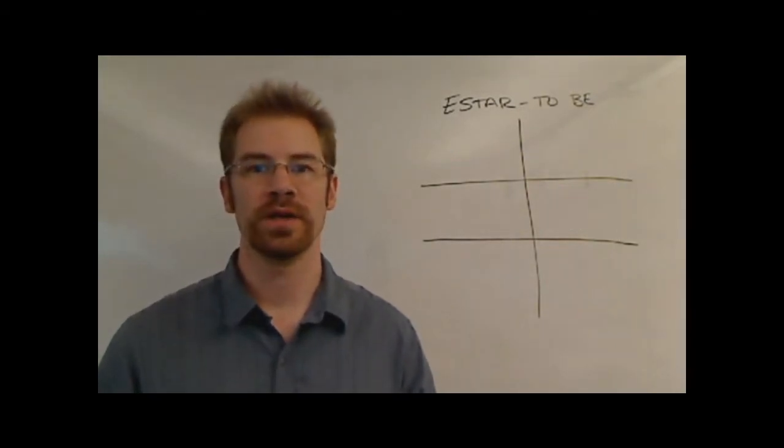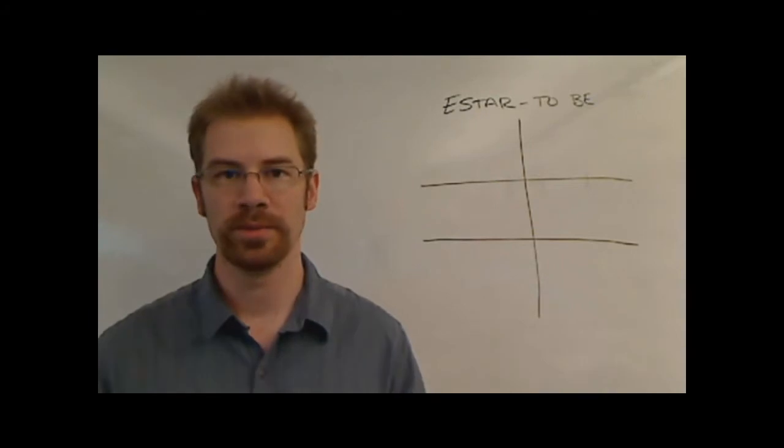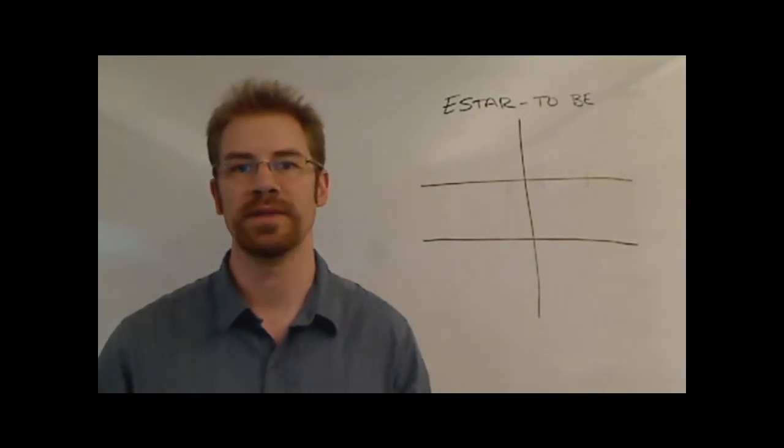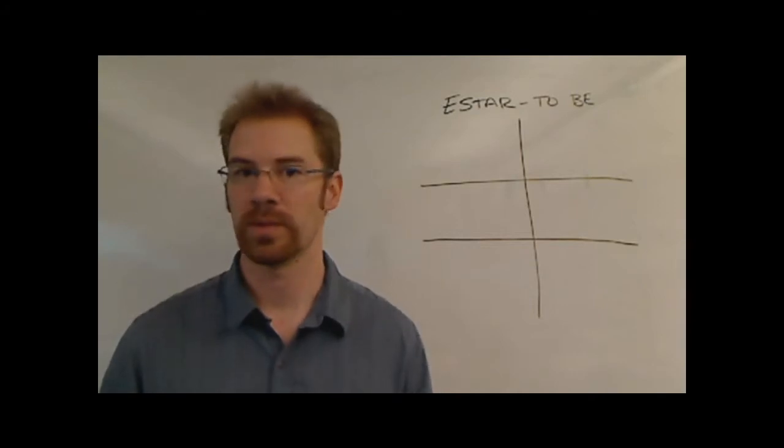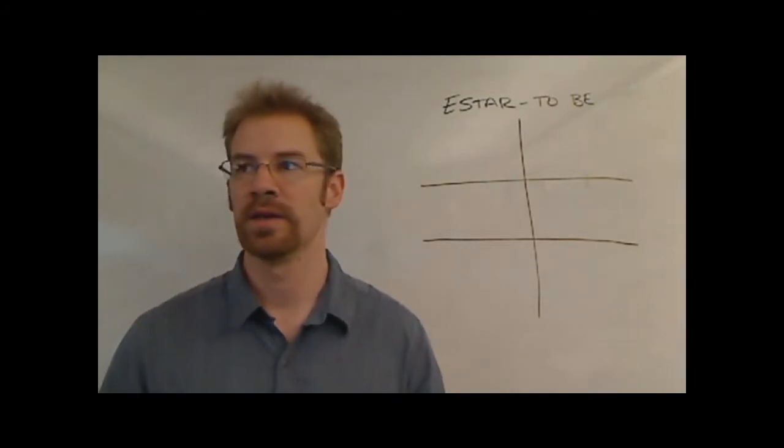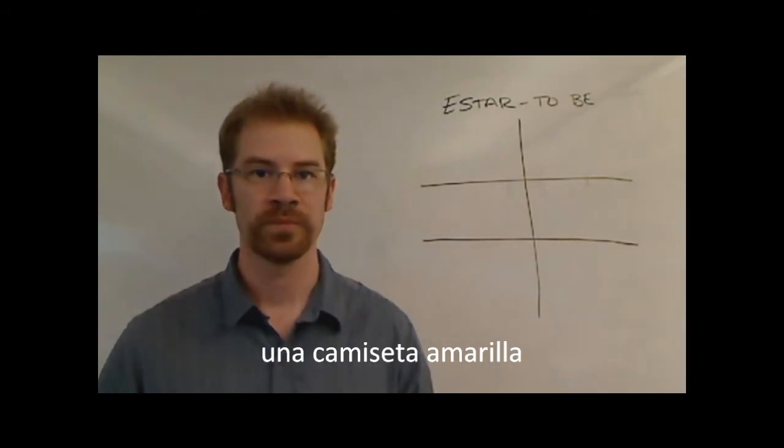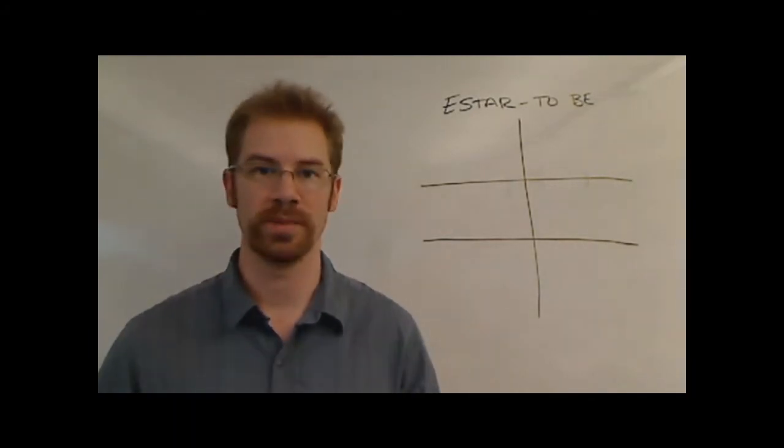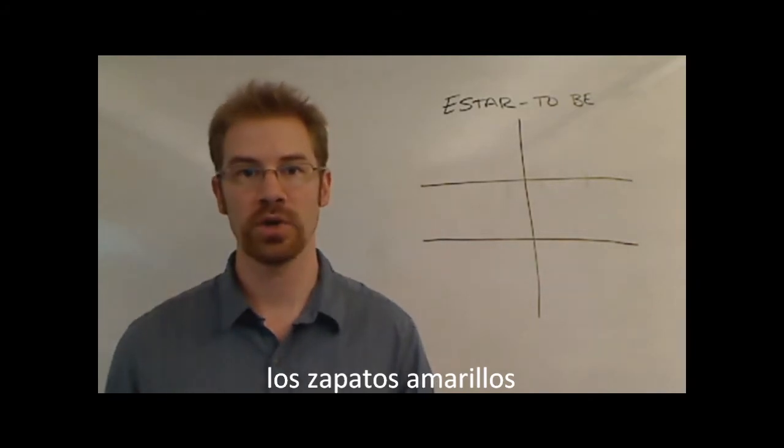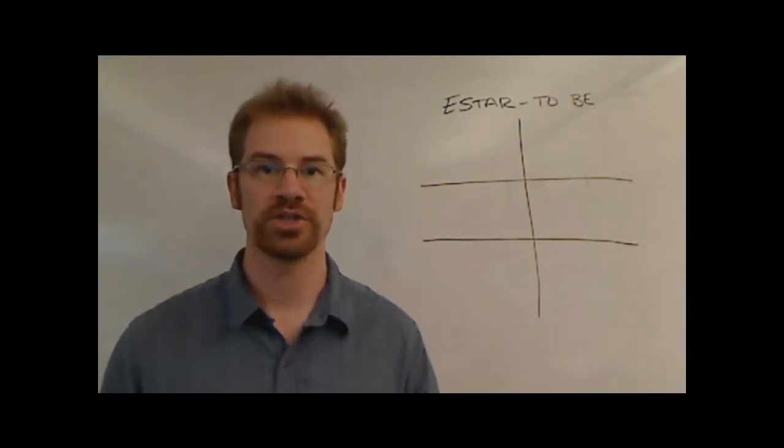Now when using the verb estar to talk about how people are feeling, you also have to keep in mind noun adjective agreement. Earlier back we talked about using colors to describe clothing. For example, if you had a yellow t-shirt it would be una camiseta amarilla. If you had yellow shoes they would be los zapatos amarillos and you had to make everything match up. You got to do the same thing with these as well.